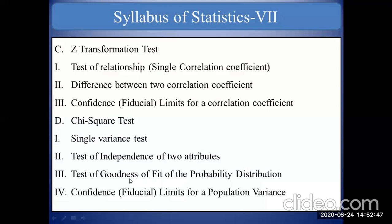The last method in chi-square test is confidence limits for population variance. If you do not know the exact amount of population variance, you can find the lower limit and upper limit within which the true population variance will fall. So basically in chi-square test we will see these four methods.